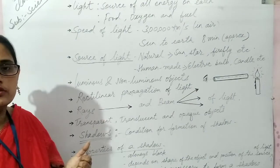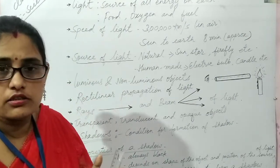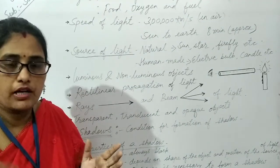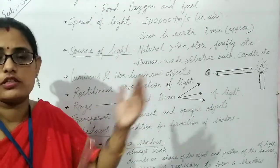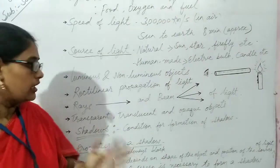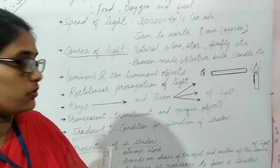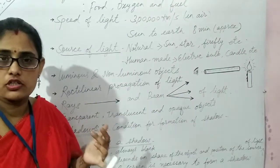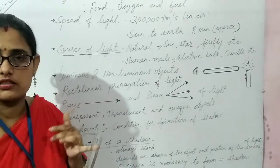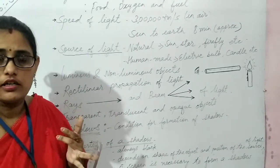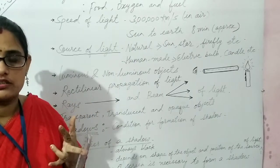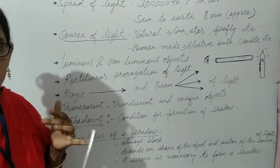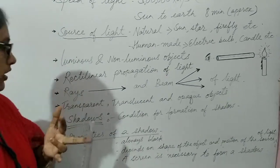Now, shadow. When light is traveling and there is an opaque object in its path, a shadow is formed on the other side on a screen. For the formation of a shadow, three conditions are required: a source of light, an opaque object, and a screen. These are the three essential conditions for shadow formation.